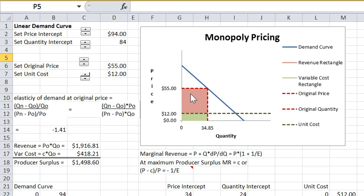So if you net the variable cost from the revenue rectangle, you get this difference, which is this rectangle. That difference is called producer surplus. That's what the monopolist is trying to maximize.